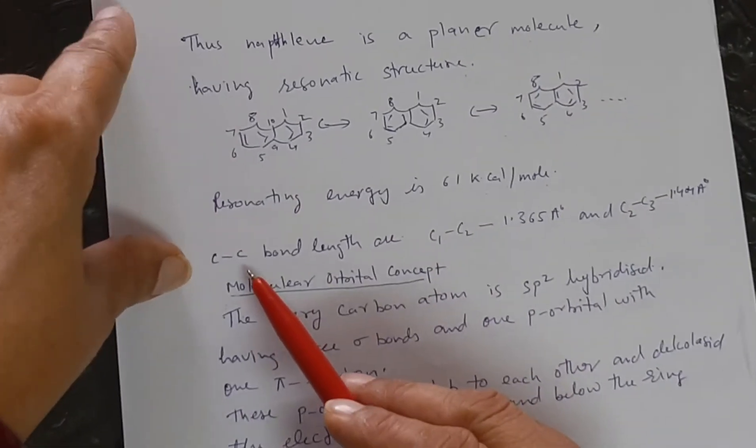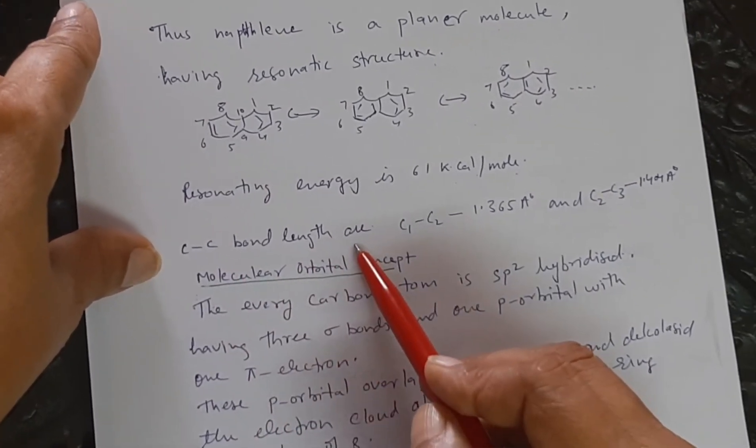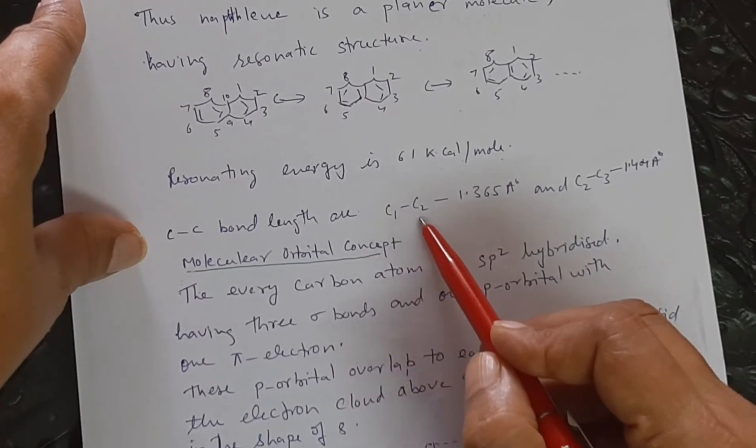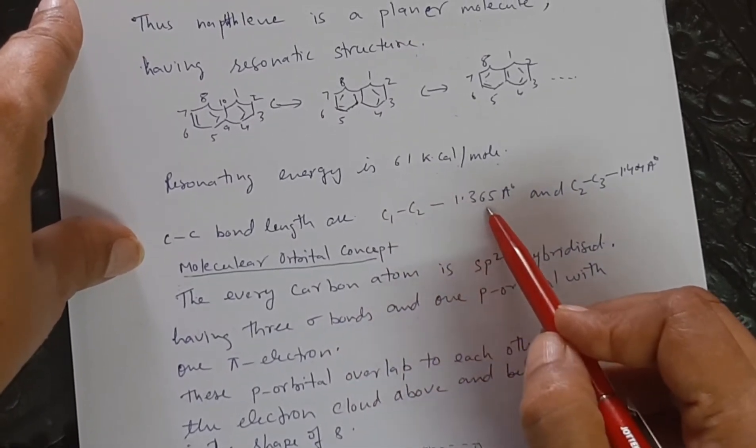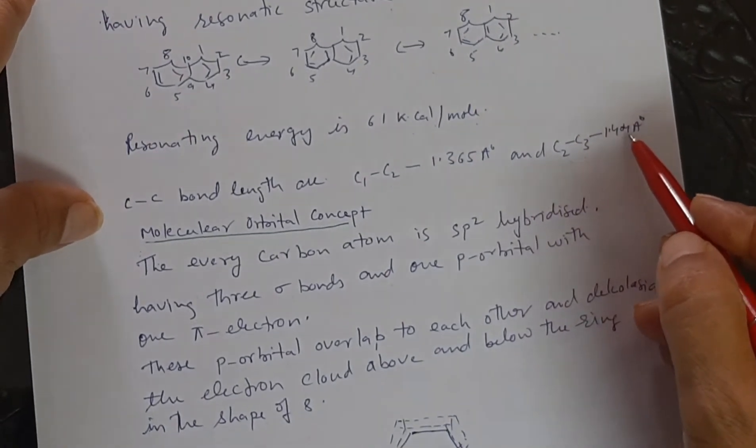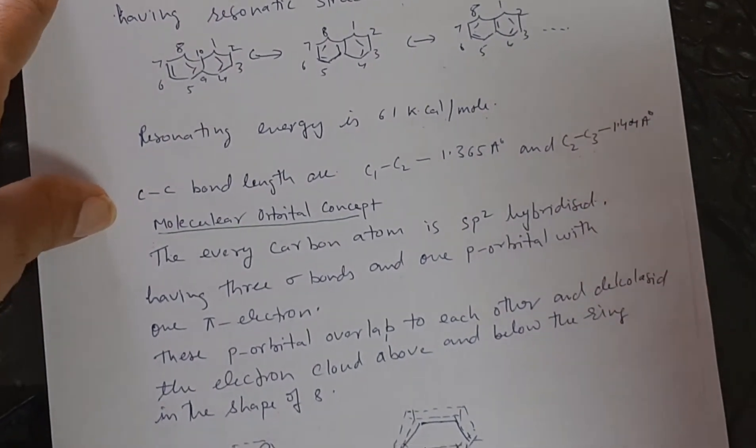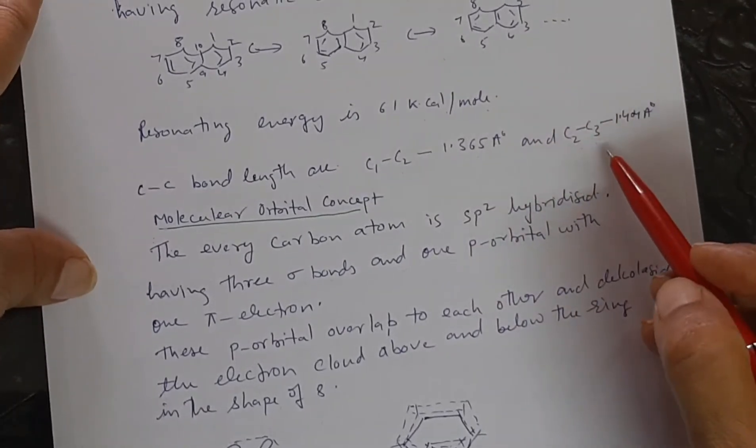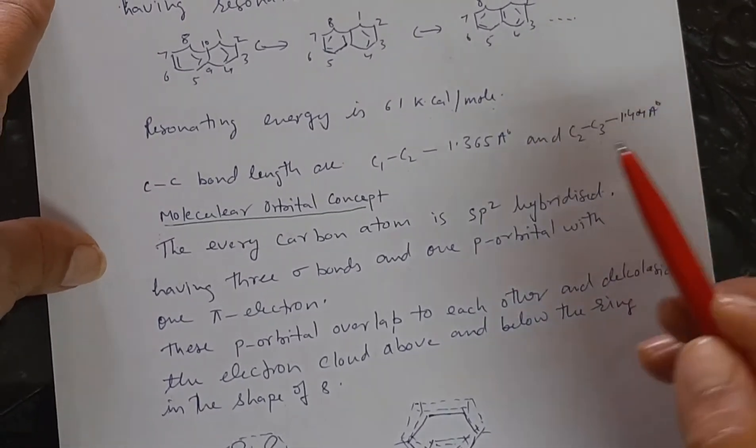Also, in naphthalene, the CC bond lengths are of 2 types. The C1 and C2 is 1.365 angstrom and C2 and C3 is 1.404 angstrom. All are not equal.